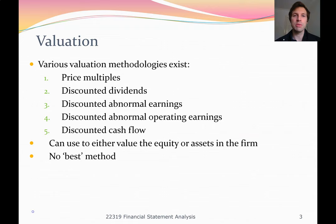In today's lecture we're going to be looking at the residual income model, also called the discounted abnormal earnings model; the residual operating income model, also called the discounted abnormal operating earnings model; and the discounted cash flow model. There's no single best model, but we'll discuss the advantages and disadvantages of each. Before learning the three new models, I'm going to do a lot of revision on the dividend discount model, because a solid understanding of it makes the subsequent models a lot easier to learn.